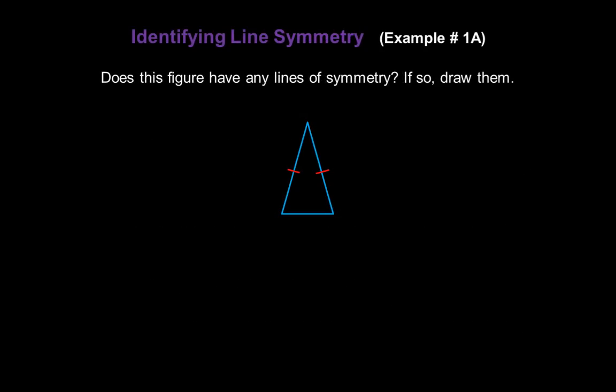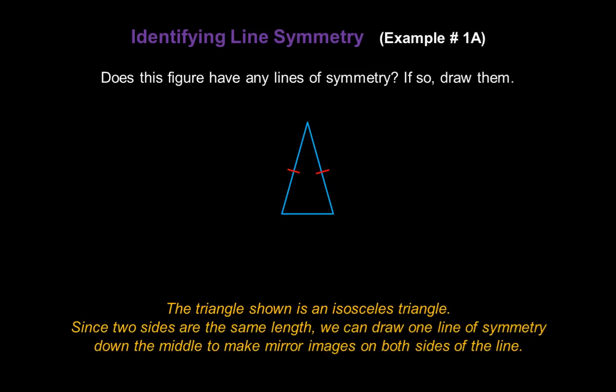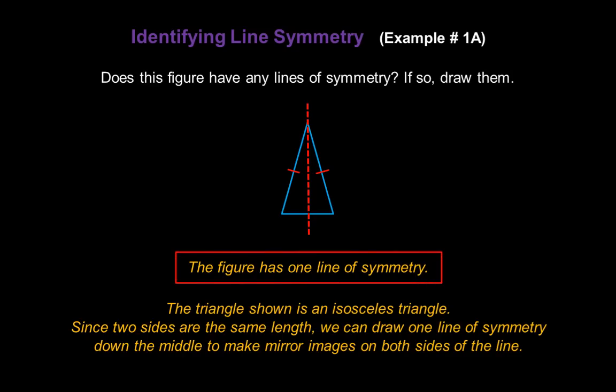Let's take a look at an example. Does this figure have any lines of symmetry? And if so, let's draw them. The triangle shown is an isosceles triangle — two sides are exactly the same length. Since two sides are the same length, we can draw one line of symmetry right down the middle to make mirror images on both sides of the line. So this figure has one line of symmetry.